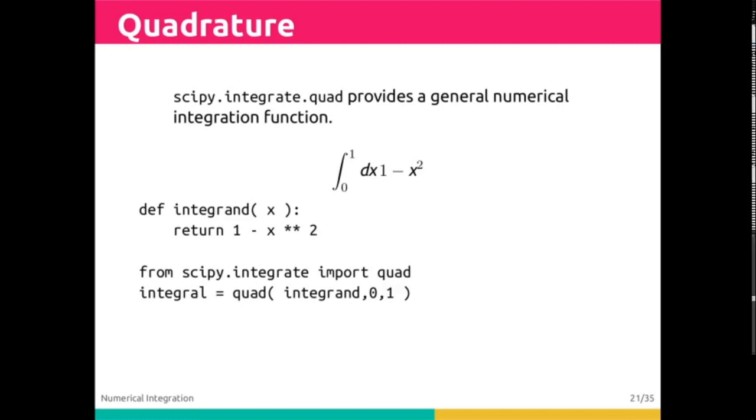Here we have an integral that's easy to solve, relatively easy to check quickly by hand. Our integrand is 1 minus x squared. It's a definite integral from 0 to 1 in x. We're going to define this as a function, import quad, and run this as quad, integrand being the function, from 0 to 1.